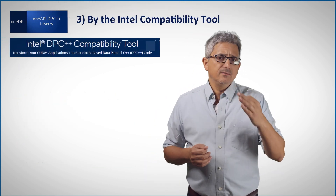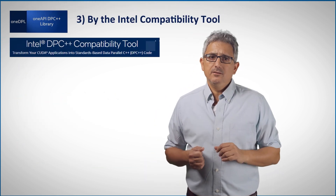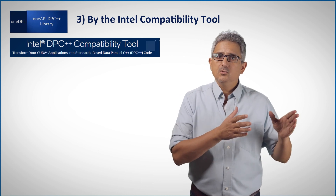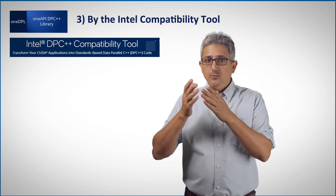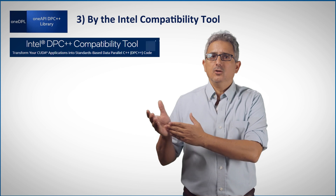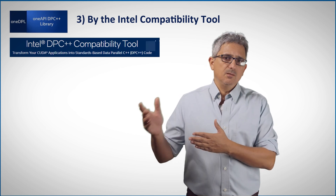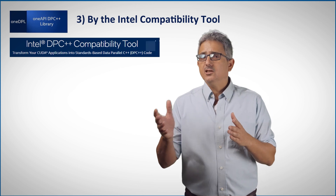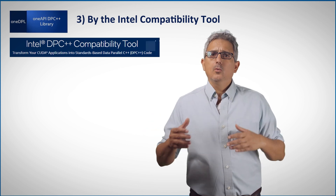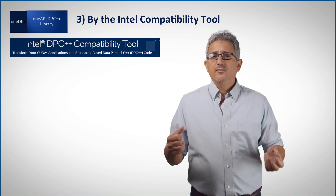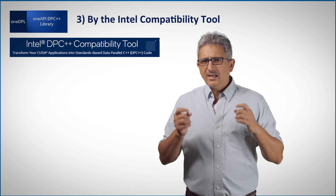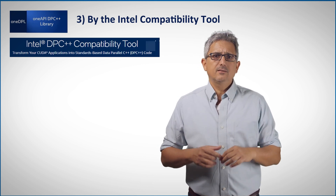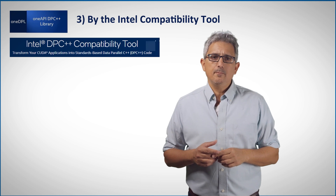The third way is by the Intel compatibility tool. If you're migrating legacy CUDA code to C++ with SYCL so it can run not only on a specific GPU but on CPU, GPU, FPGA and more — the tool, called SYCLomatic, will also use primitives from the OneDPL library. Take a look at the video on the compatibility tool; it is also part of the OneAPI base toolkit.